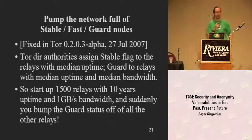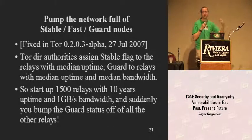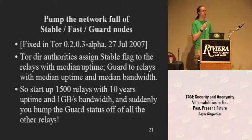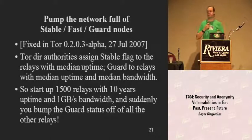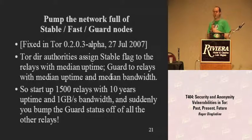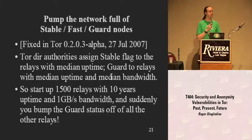Another attack from researchers at Colorado University. The way clients choose paths is based on flags in the directory. Servers marked 'stable' are recommended for IRC or instant messaging — assigned based on median uptime. But if you get a botnet and sign up 2,000 servers all claiming ten years of uptime, you've just claimed all the stable flags and bumped everybody else off. The same thing worked for the guard flag — directory authorities specify which servers to use as the first hop. If a bad guy shows up with 2,000 servers better for first-hop use, he's guaranteed to be chosen.